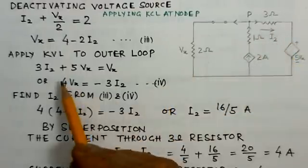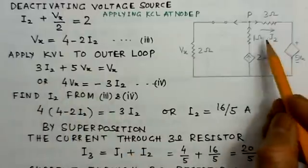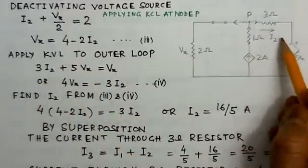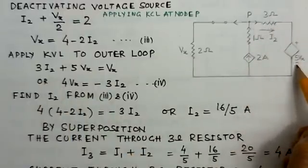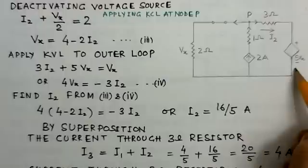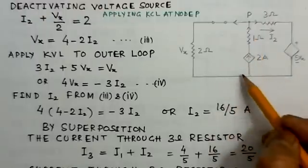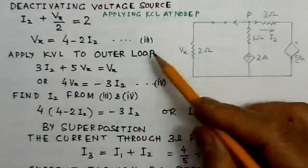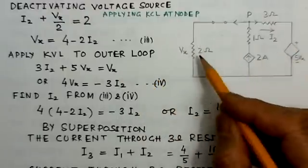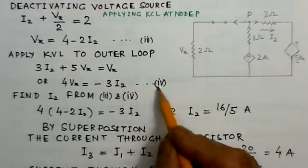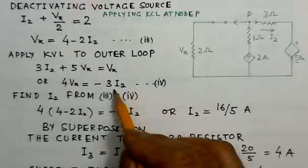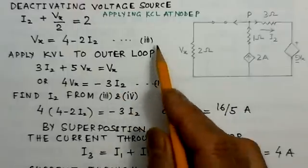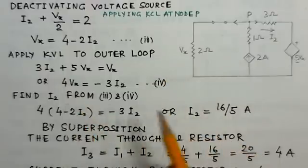Now we apply KVL to the outer loop. This loop we apply KVL. So if you apply KVL this is 3I2, then 5Vx and this voltage is Vx. So it equals Vx because polarity is different. This gives 4Vx equals minus 3I2. From these two equations we can find the value for I2.